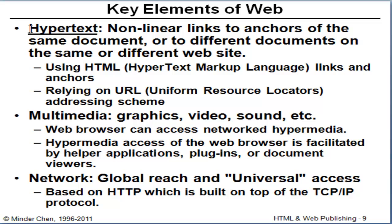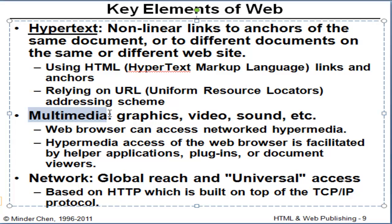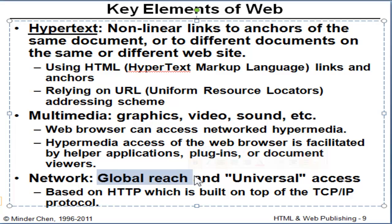The key element for the web is first the hypertext, which is nonlinear, so we can link to other pieces of information on the web. We also rely on URL, which is uniform resource locator, to specify online resources. And although we call it hypertext, the web is really a hypermedia environment where you can use graphics, sounds, video, etc., along with a web page. Since we're building on top of the Internet, that gives us a global reach and universal access by various devices that have browsers.